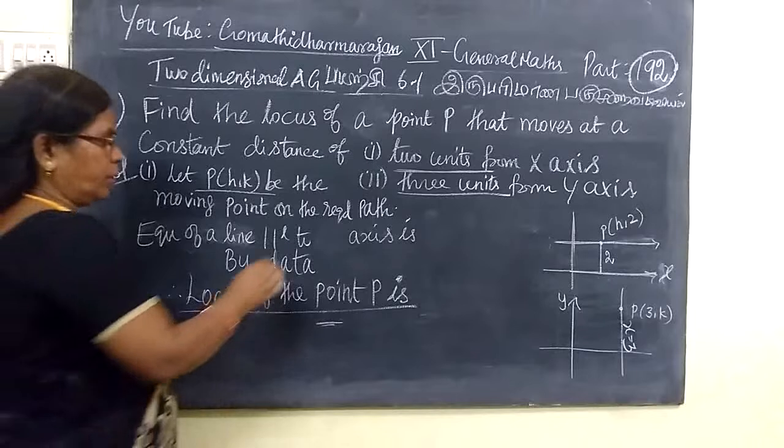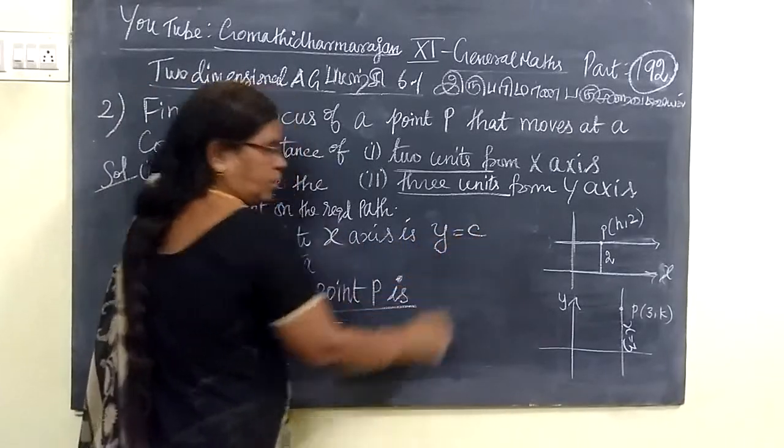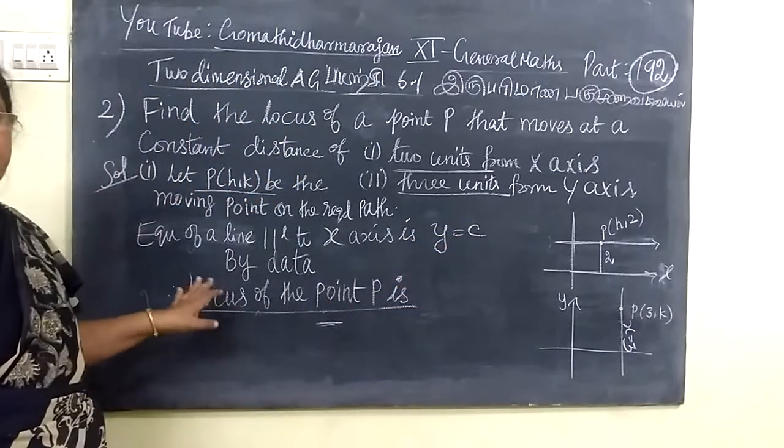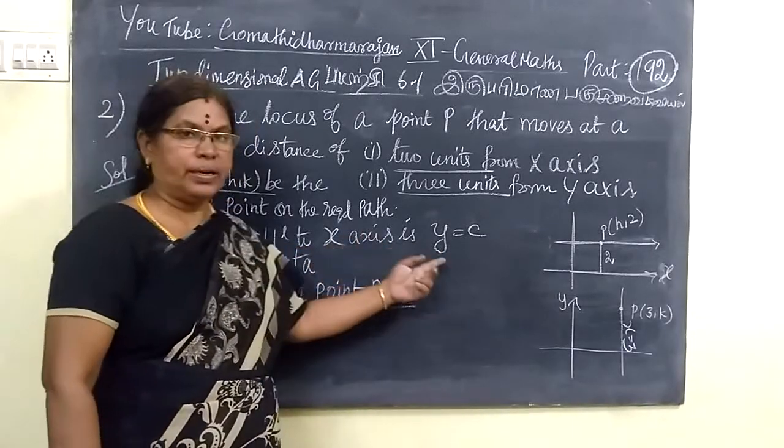The equation of a line parallel to the x-axis is of the form Y equal to C. This equation is Y, where the Y-axis value is X.